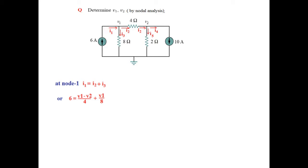We write 6 amperes for I1. For I2, this current is going from V1 to V2, so we write (V1 minus V2) divided by 4 ohms. I3 is coming from V1 to 0, so we write V1 divided by 8 ohms.